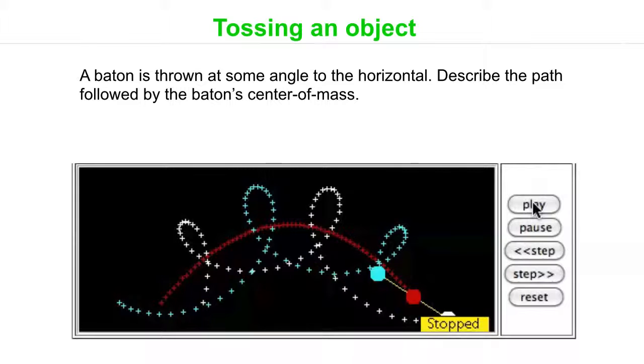motions from any other point on the object, including the two objects at either end of the rod, and those are shown with the white and the blue paths.